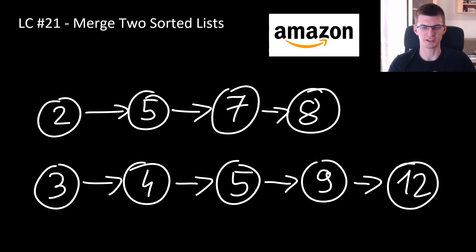The statement is quite simple. We are given two sorted lists like those you're seeing right now on the screen and we need to combine them, create one big sorted list and return the head to that sorted list.